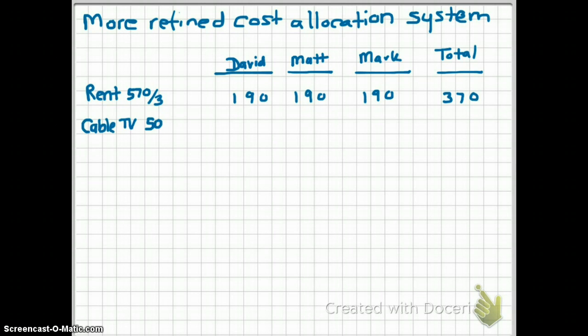The cost of cable TV is $50. Well, Matt says, I'm always in my room and I never watch TV, so I don't want to pay for cable. So David and Mark decide to split the cost of cable equally.